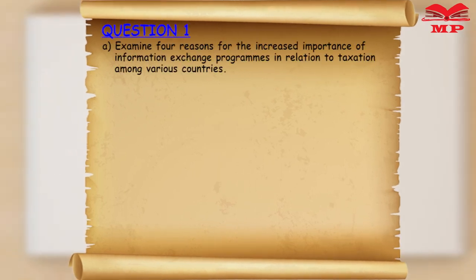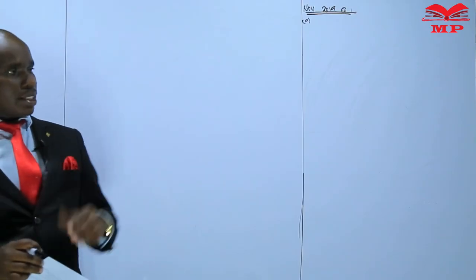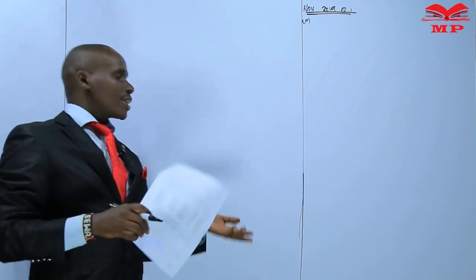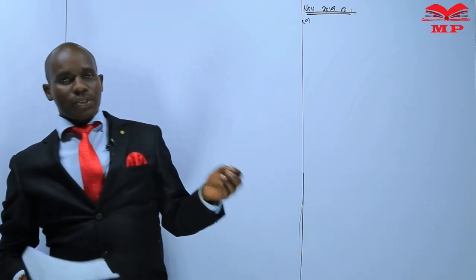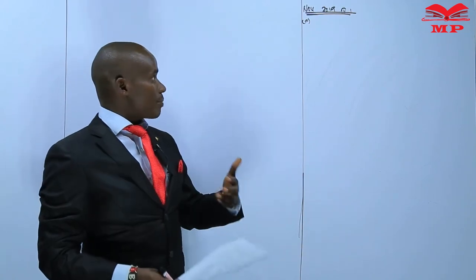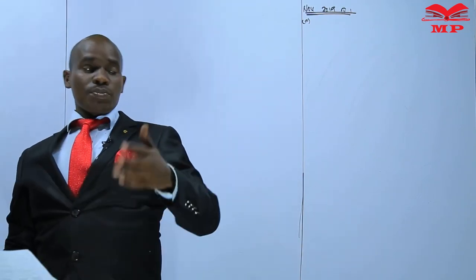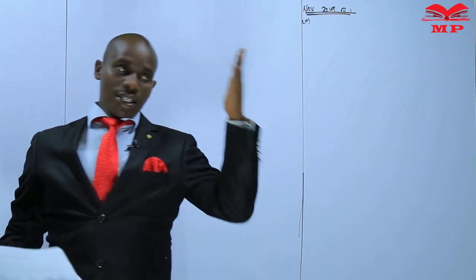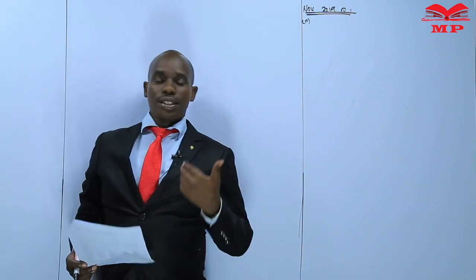Part A reads: 'Examine four reasons for the increased importance of information exchange programs in relation to taxation among various countries.' We refer to this as TIEA — Tax Information Exchange Agreement. This is a system implemented to help in the exchange of tax information among different revenue authorities. For instance, Kenya and Uganda would exchange tax information between the two countries to achieve certain goals.